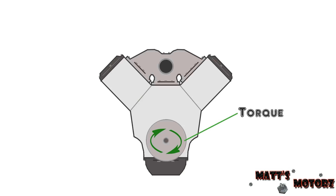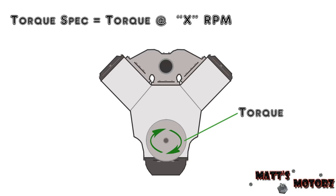Torque is a measure of how much twisting force an engine produces. An engine's torque output will vary depending on how fast it's spinning, or the RPM. So any spec of torque needs to be followed with a specification of how fast the engine is spinning, because the torque is different at every RPM.